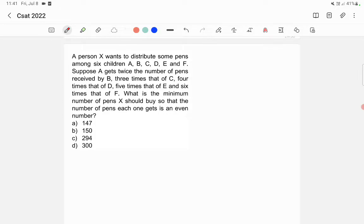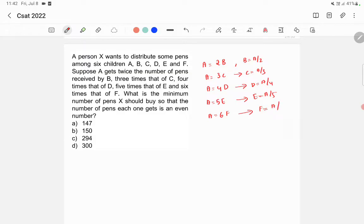You need to find out the total number of pens bought by X. Now it says that A gets twice the number of pens that B gets. Also A gets thrice the number of C. Similarly, 4 times that of D and 5 times E. Also A gets 6 times that of F. So from here you can write B equals A by 2, C equals A by 3, D equals A by 4, E equals A by 5, and F equals A by 6.